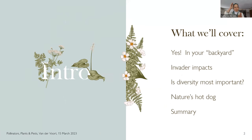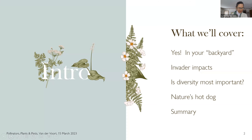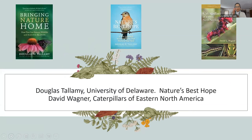Today we're going to talk about your own backyard — what you can do irrespective of whether it's a balcony, porch, or a big meadow. We'll talk about the impact of invasive species, about diversity and whether it's the most important thing we should be thinking about. I've relied on Doug Tallamy's work for much of this preparation. His book 'Nature's Best Hope' presents the idea that we can all have a homegrown national park, addressing habitat loss and providing a how-to on improving habitat in our own backyards.